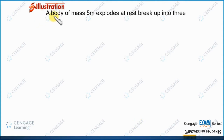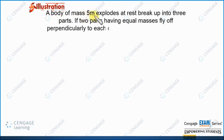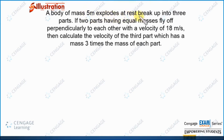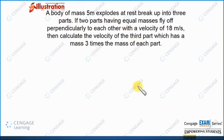In illustration number 1, a body of mass 5m explodes at rest and breaks into three parts. Two parts having equal masses fly perpendicular to each other with a velocity of 18 meters per second. We need to calculate the velocity of the third part, which has mass 3 times the mass of each of the other parts. Initially the body is at rest, so the initial linear momentum of the body is zero.